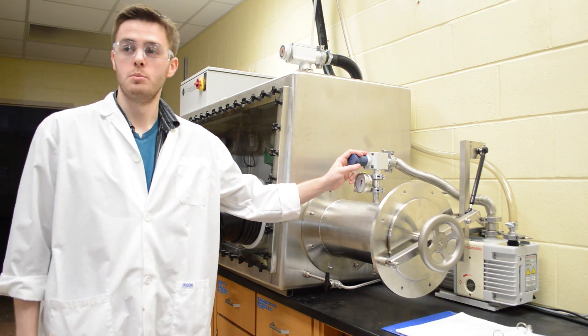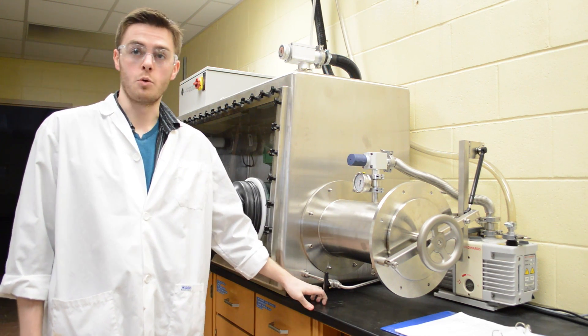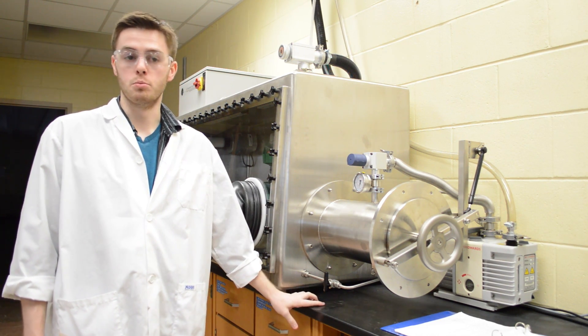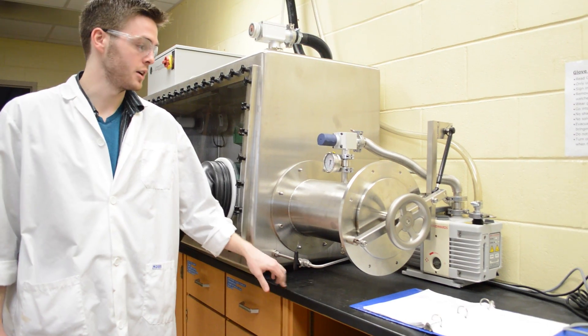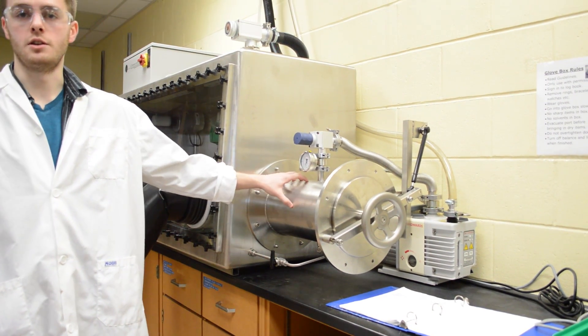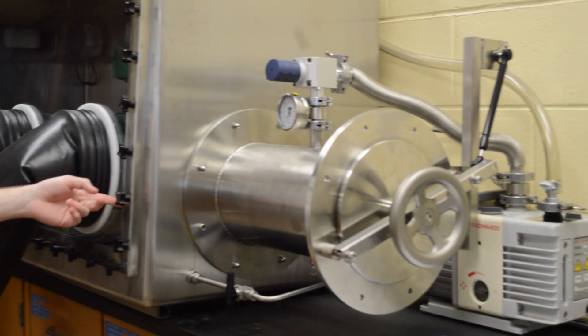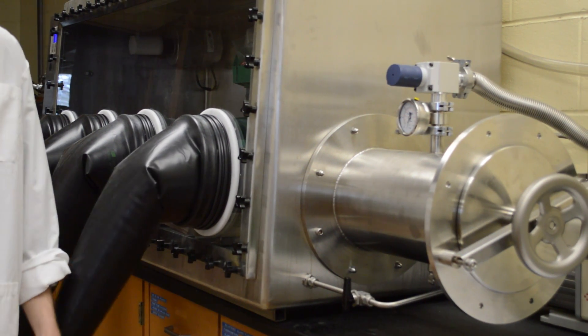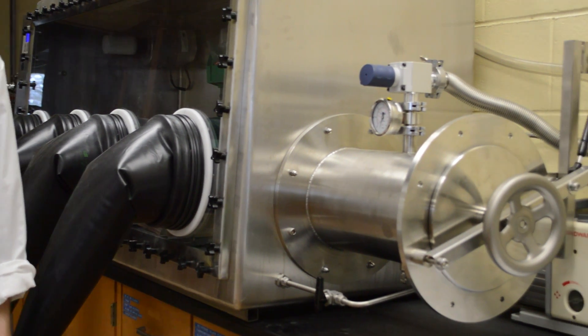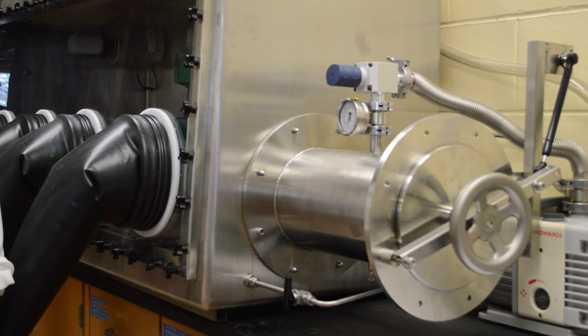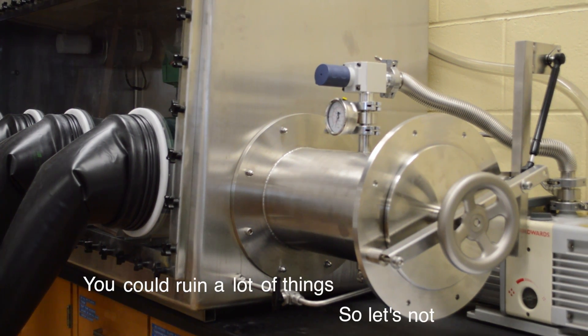When using a glove box, a lot of times what you need won't actually be inside of it. So we're going to bring in our vessels that we'll be using for reactions later on. Right now this anti-chamber is under vacuum, so before you bring anything in, you want to make sure that the door on the inside is sealed, because when you get any air inside the glove box, it's going to ruin a lot of things.